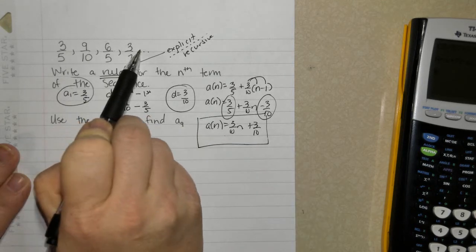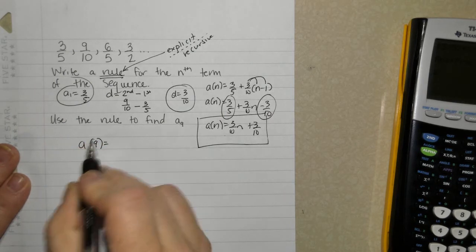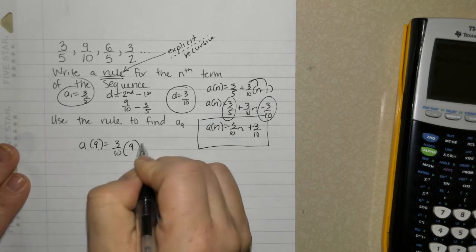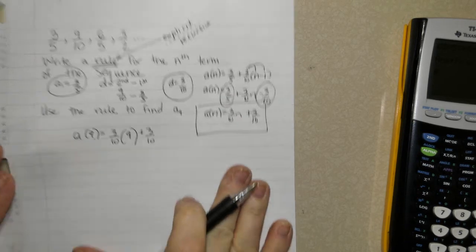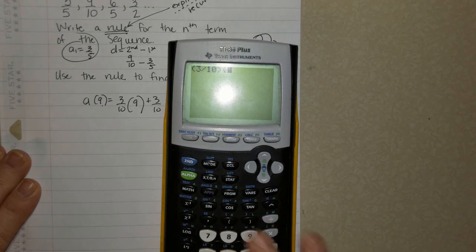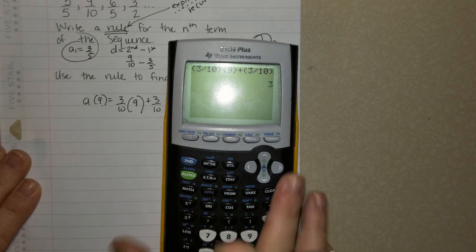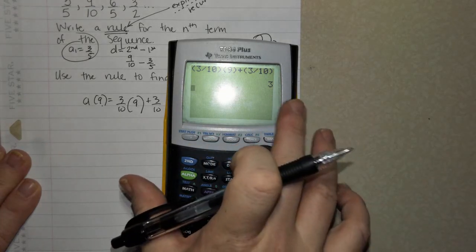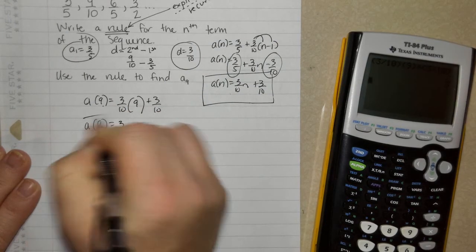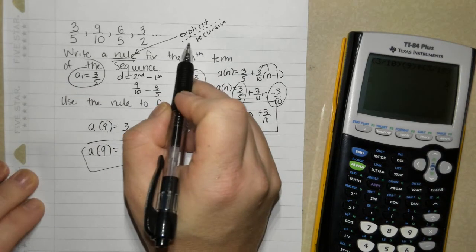So I want to know the ninth number in this arithmetic sequence. So a of 9 equals 3 tenths times 9 plus 3 tenths. Grab the calculator. 3 divided by 10 times 9 plus 3 divided by 10. And I don't even need to turn it back into a fraction because it's just a whole number. Remember, the ninth term in this sequence is the number 3.